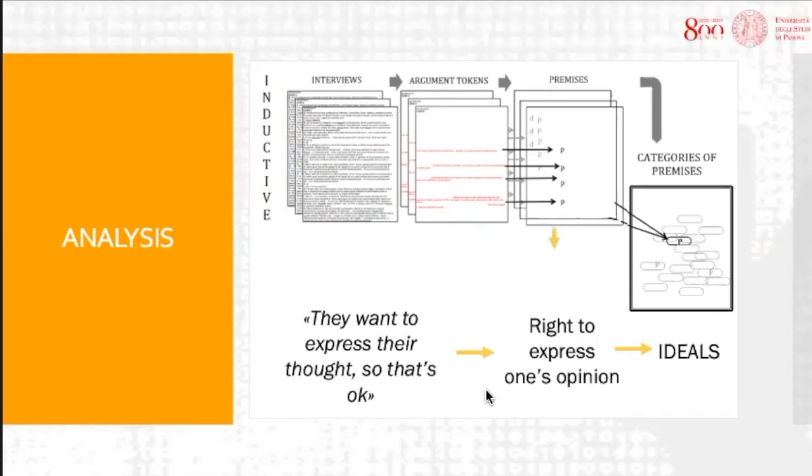Once all tokens were annotated in this way, we grouped the premises by similarity, obtaining 18 categories. In the example in the slide, the category would be ideals.